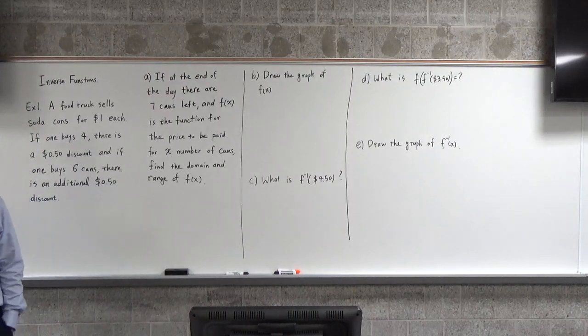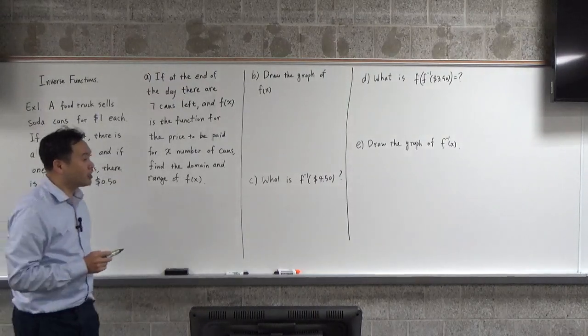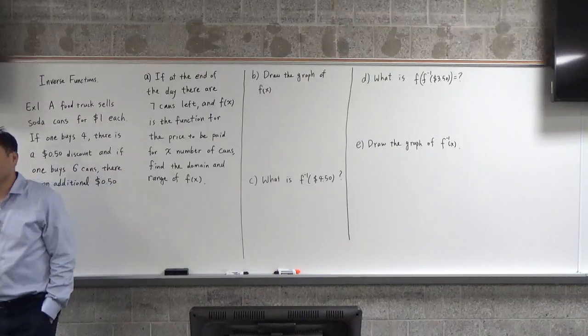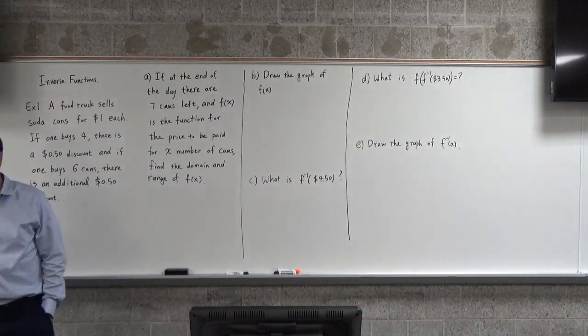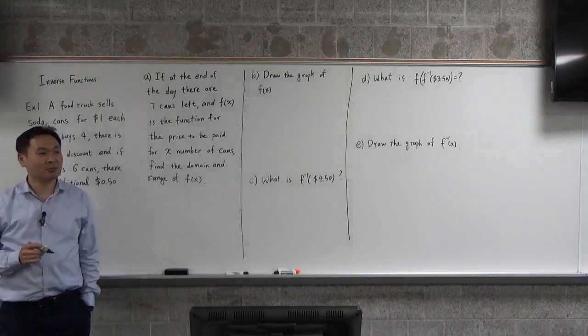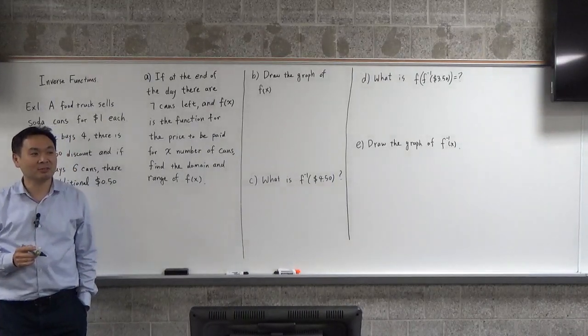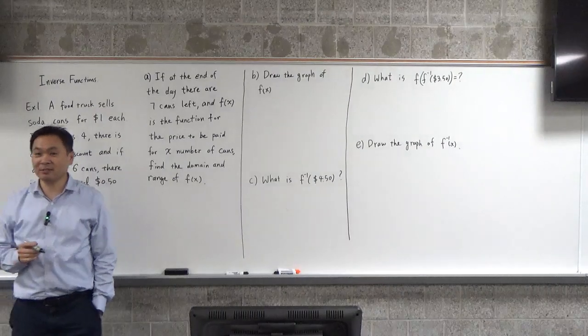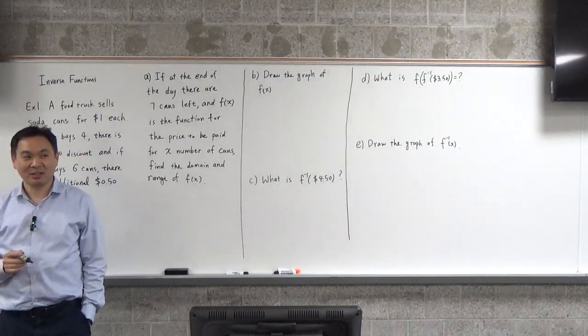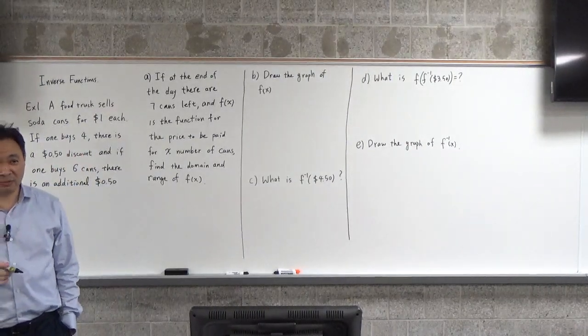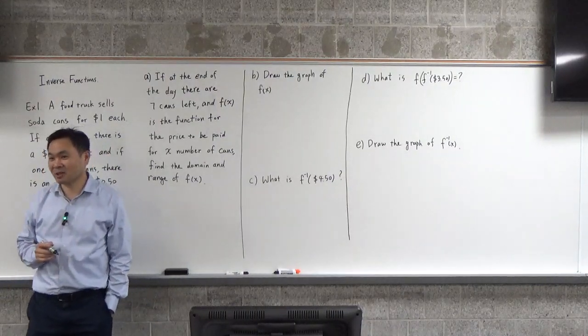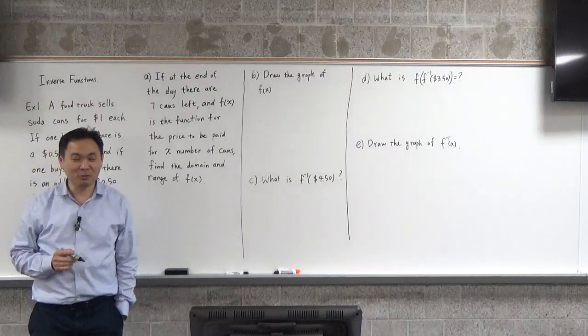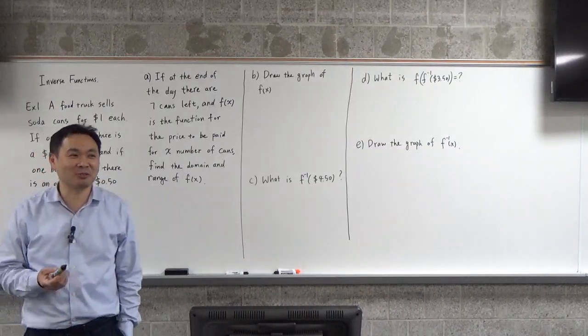Can x be negative one? No, you can't buy negative one cans. Can x be seven? Yes. Can x be eight? No. Can x be 0.5? No, you can't buy 0.5 cans; you'd have to destroy the can, so it doesn't make sense.